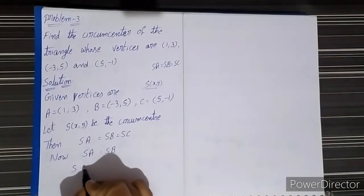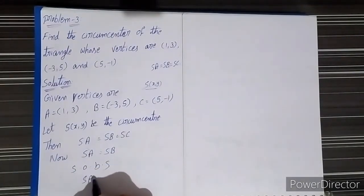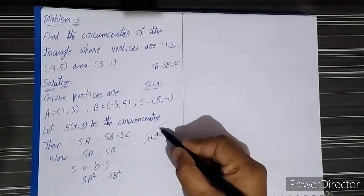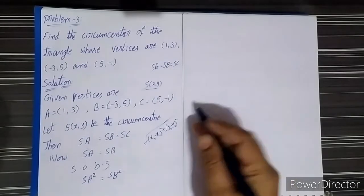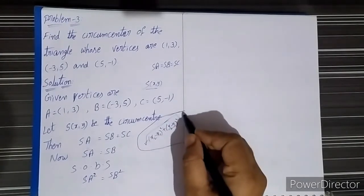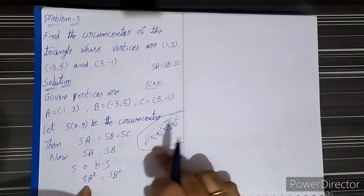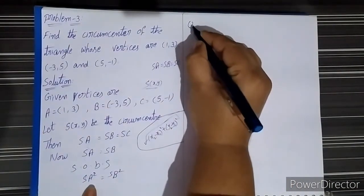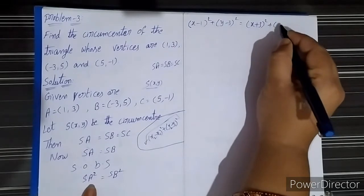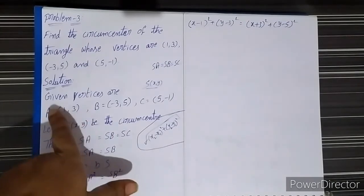Then SA² equals SB². We apply the distance formula: (x2 - x1)² + (y2 - y1)². Squaring on both sides, the square and root get cancelled. After substituting the values, we get: (x - 1)² + (y - 3)² = (x + 3)² + (y - 5)².